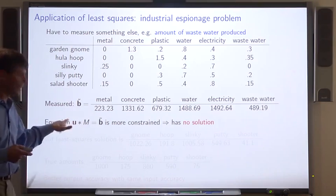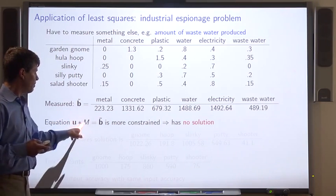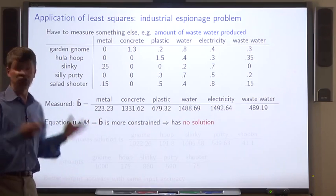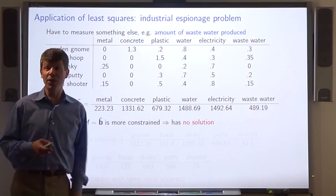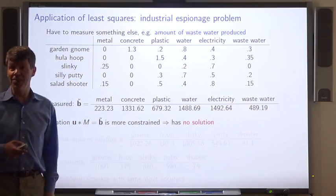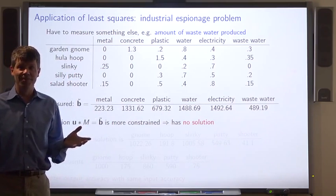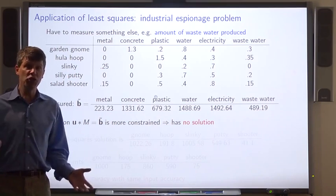Now if we look at the equation, u times m equals v tilde, it's more constrained. There's an additional equation. As a consequence, in fact, since we're using this approximate data, this equation has no solutions. It's too constrained. So what do we do?